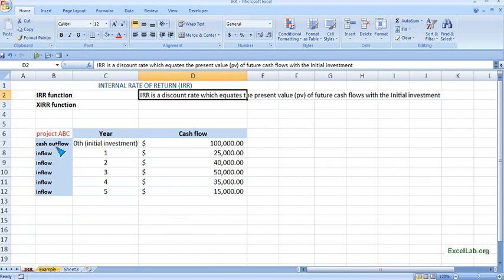Now let's assume there is a project JBC and these are the cash flows. Initial investment is $100,000, and from the first year onwards the project started getting cash inflows of $25,000 and so on. Now, what is the rate of return generated with these cash flows?